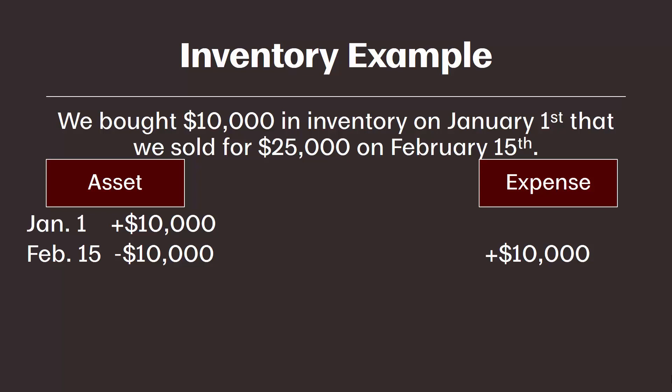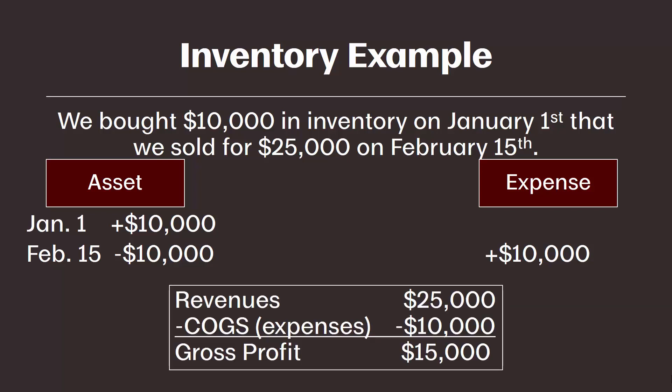We're leaving a few pieces out here because I'm specifically showing how the cost of inventory moves from an asset to an expense. We will look at several other examples with inventory in the future covering the whole transaction. For now, here's a quick preview: the twenty-five thousand dollar sales price is revenue, recorded as revenue for the sale of that inventory. We would also either receive cash or accounts receivable for that sale.